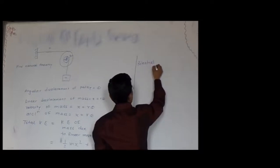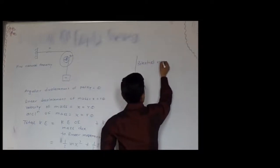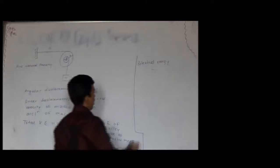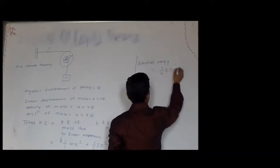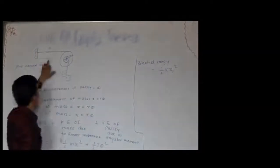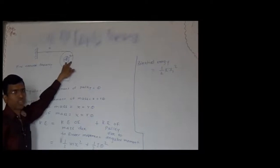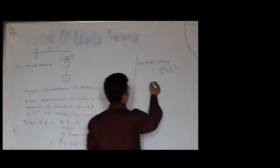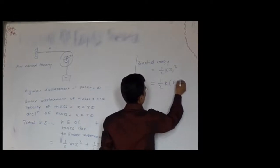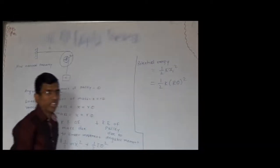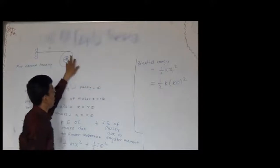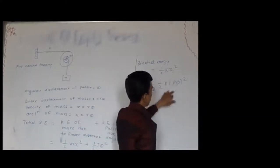Now the potential energy is present in the spring. Potential energy equals one-half k·x₁-squared. x₁ is the deflection of the spring, which occurs as the angular displacement of the pulley takes place. The value of x₁ is capital R·theta, because the spring is connected to the pulley at radius capital R and theta is the angular displacement. So x₁ equals R·theta.